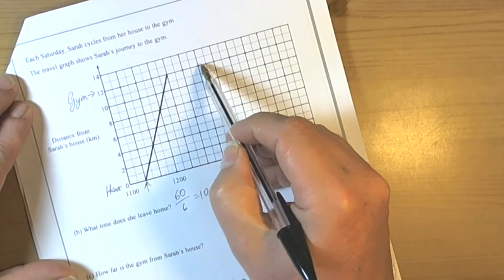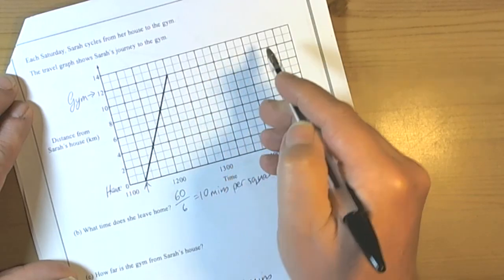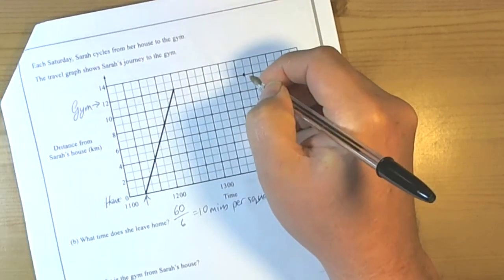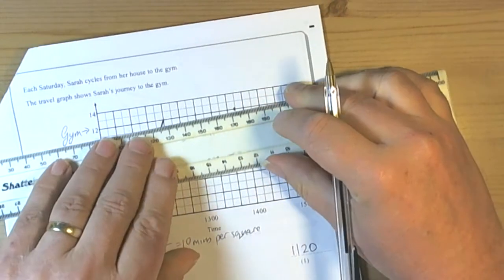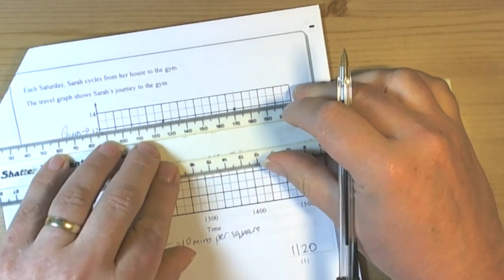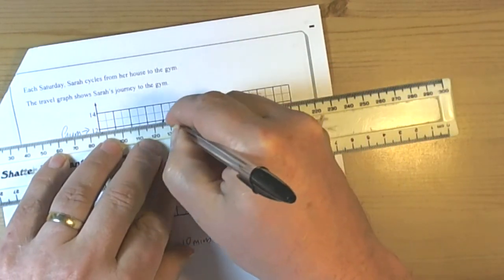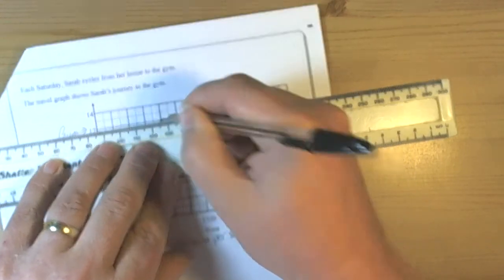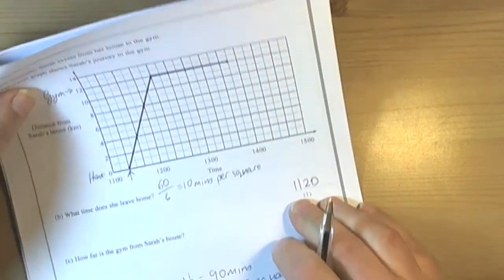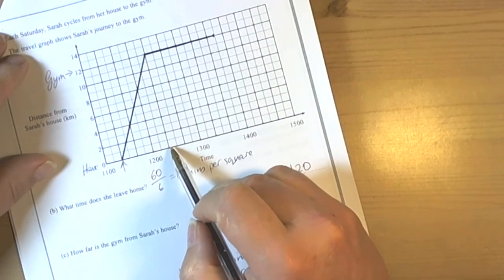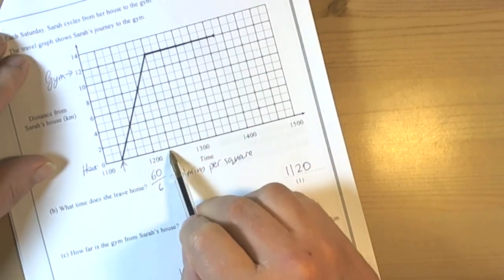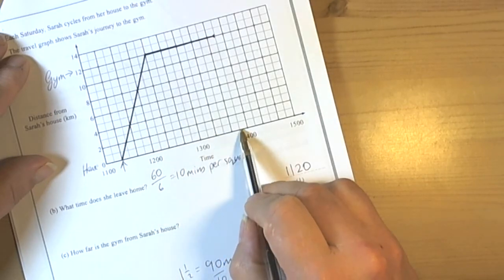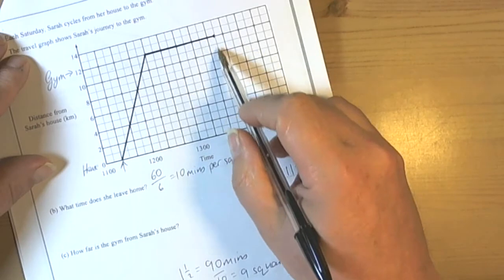So we need to be counting 9 squares on from here. 1, 2, 3, 4, 5, 6, 7, 8, 9. So we know that the part of the journey from the gym staying still is going to be here. We could have obviously added on an hour from 12:20, 13:20, and then we could have added on another half hour. You know, a different way of doing it.